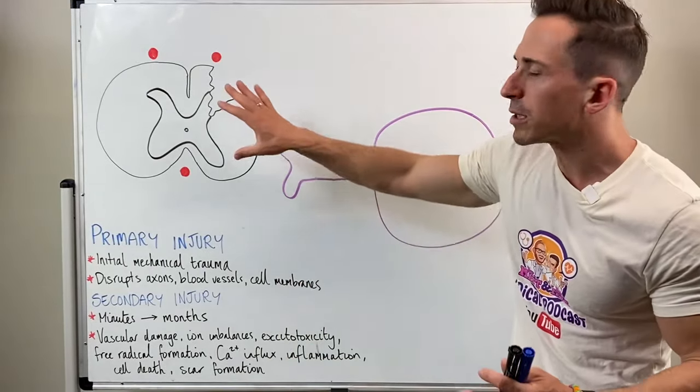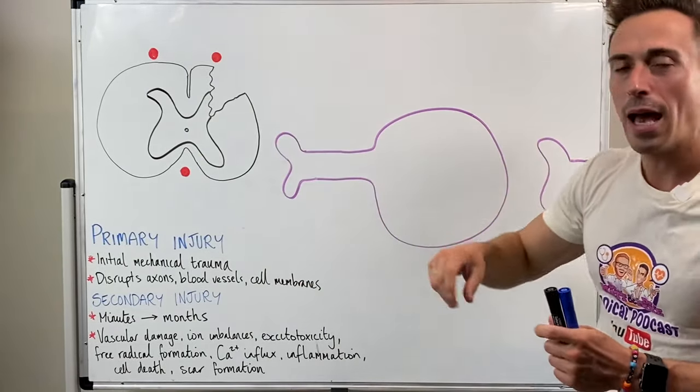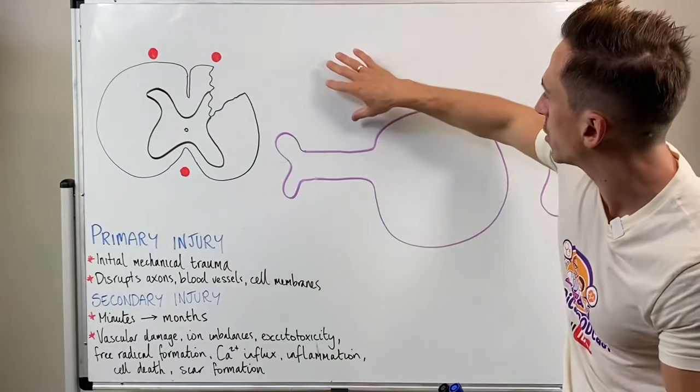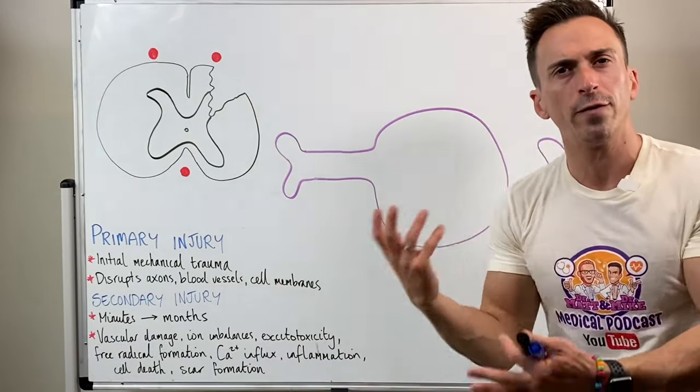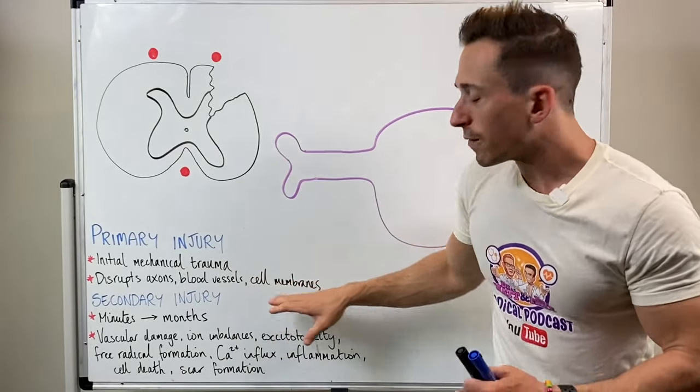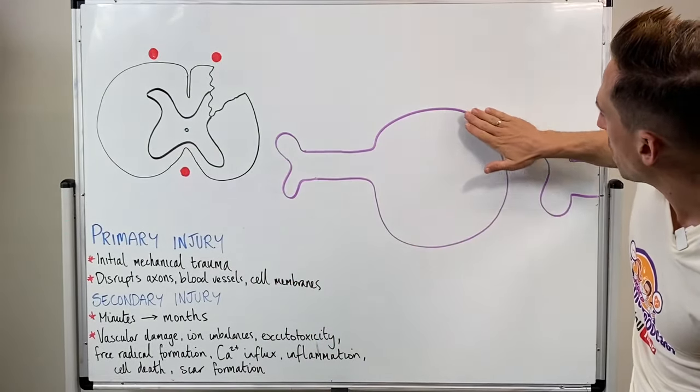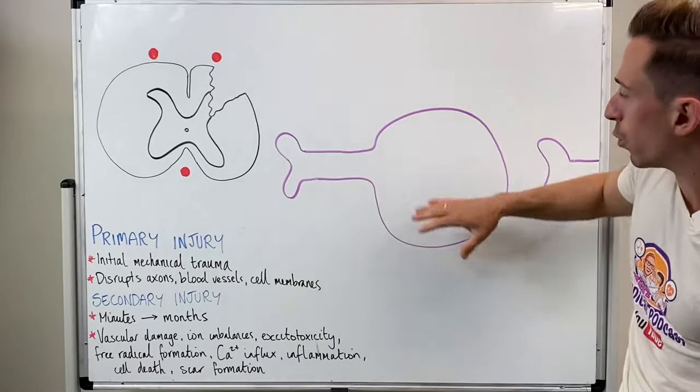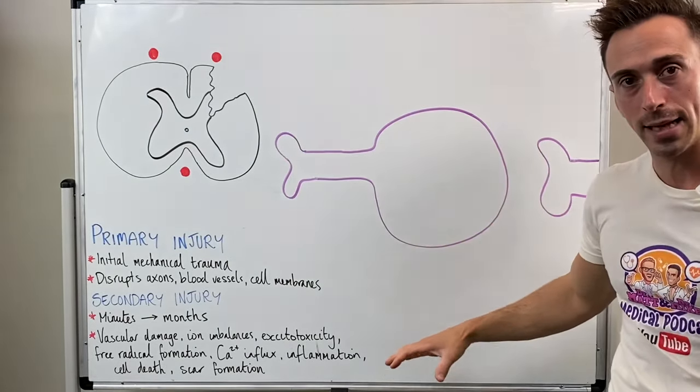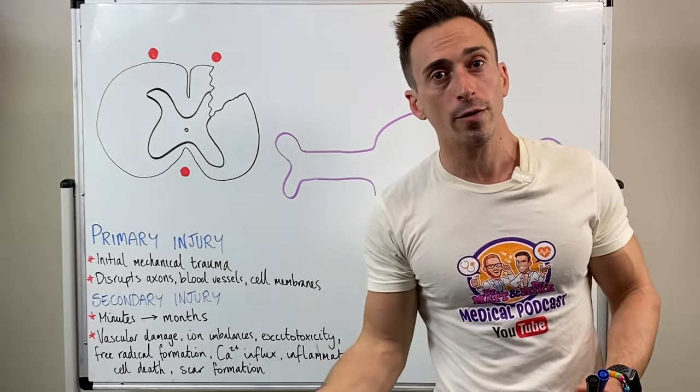The cells within the spinal cord are neurons and glia, supporting cells that surround the neurons, provide nutrients, and make sure the environment's okay. Disruption of the cell membrane means that this membrane that surrounds it is broken, and all the components inside the cell leak out. This is what's happening in the primary injury phase.